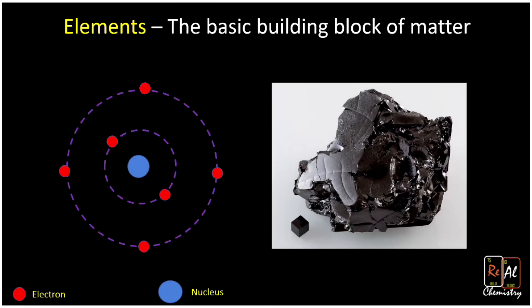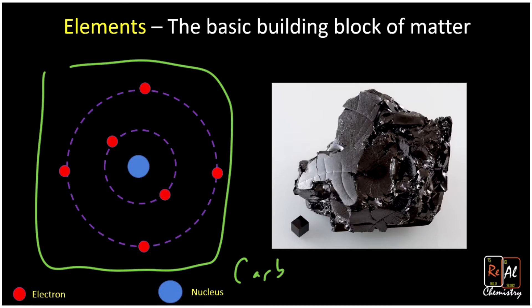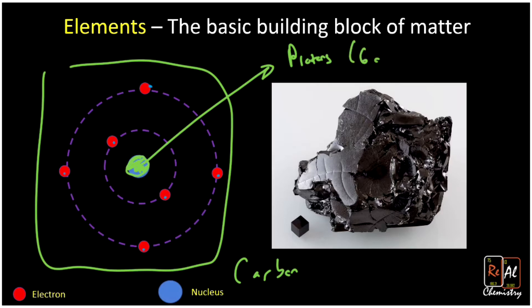The basic building block of all matter is elements. Everything you see around you is made of elements, and elements are just different types of atoms. Here is one atom — this is carbon. You'll notice that our atom has a nucleus in the center, and around it are a bunch of electrons, shown in red. The nucleus is positively charged because it's made of protons, which are positive. Carbon has six of them, and those positively charged protons attract the electrons and hold it together, kind of like the solar system.